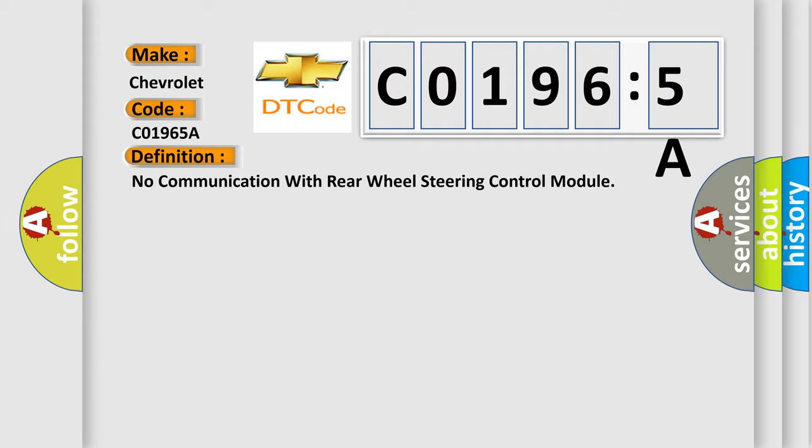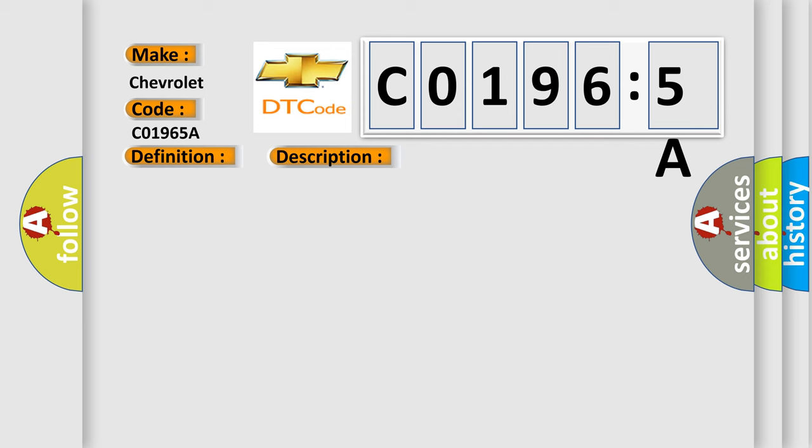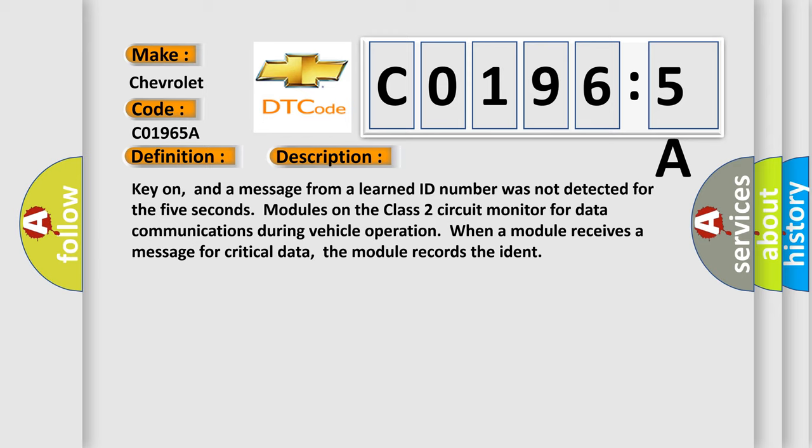And now this is a short description of this DTC code. Key on, and a message from a learned ID number was not detected for the 5 seconds. Modules on the class 2 circuit monitor for data communications during vehicle operation. When a module receives a message for critical data, the module records the ident.